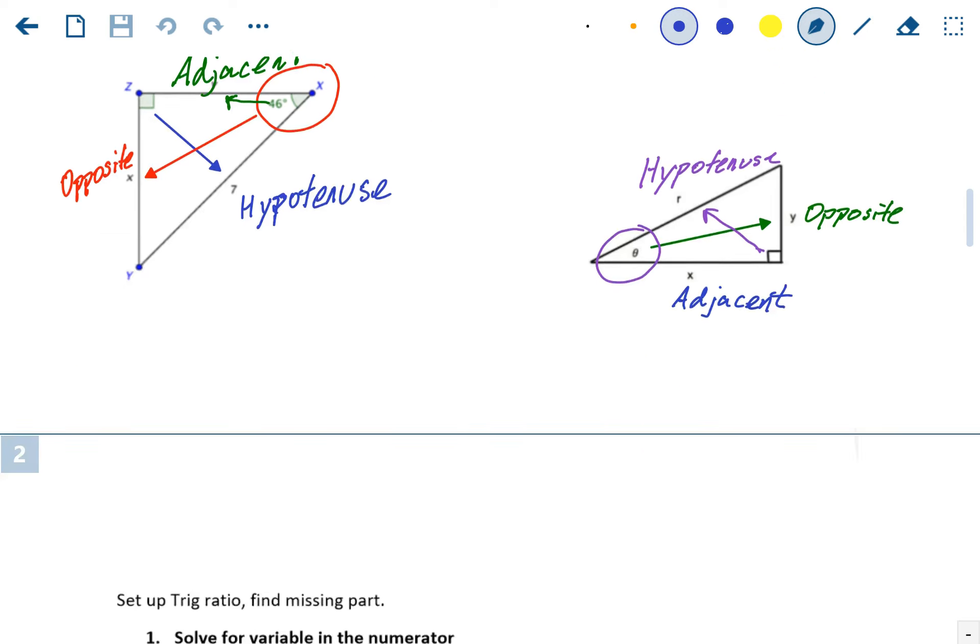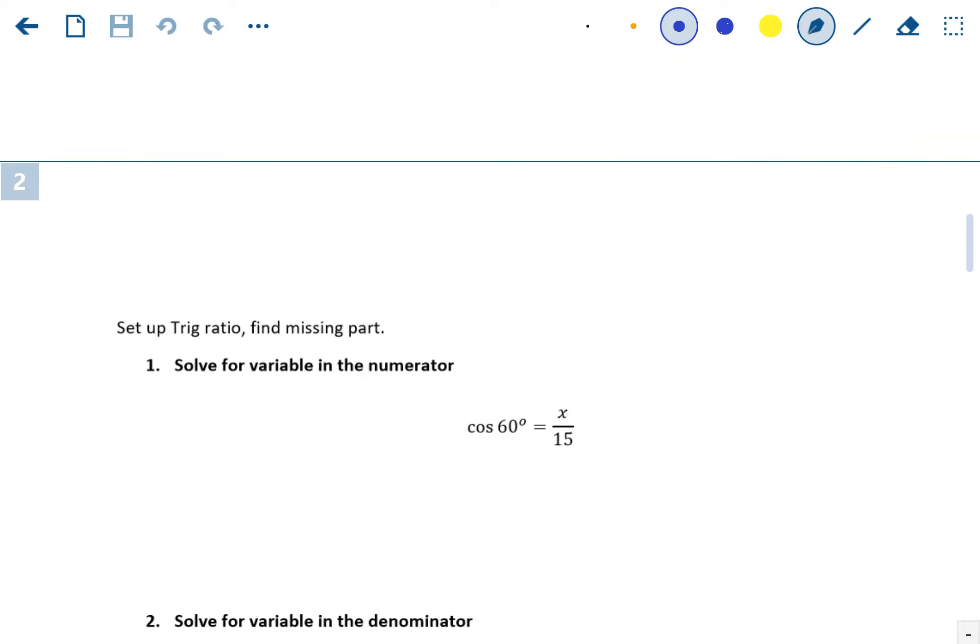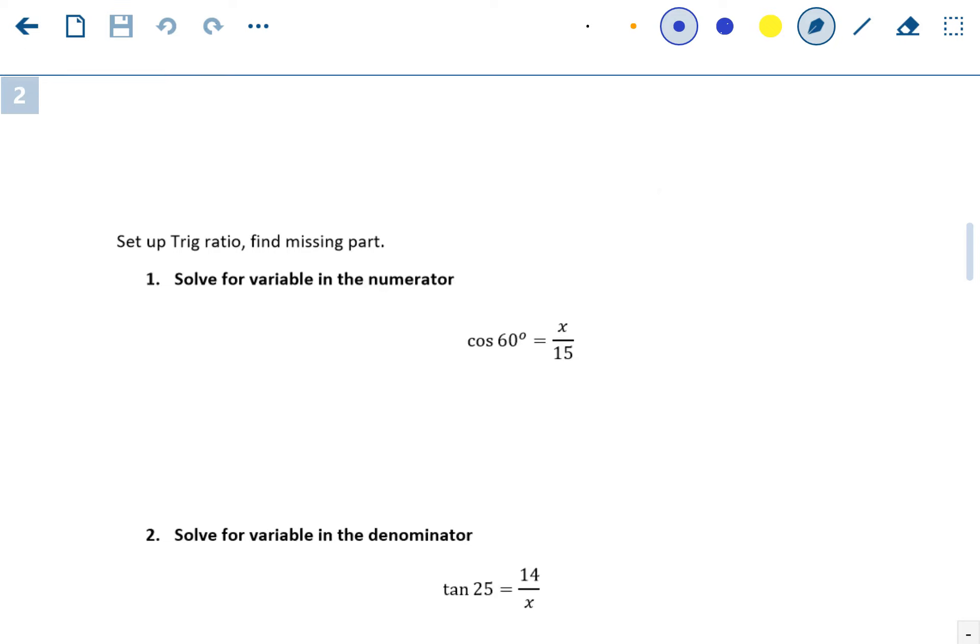The ones we're going to focus on are sine, cosine, and tangent. Now again, this is a trig review. You should be somewhat familiar with those three already. And each one has its own ratio, its own fraction that creates it. So they're all involving an angle.